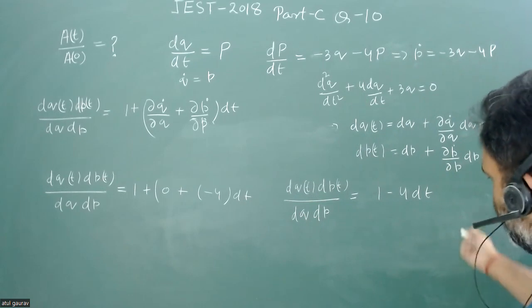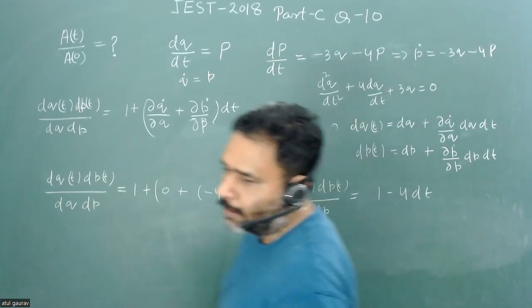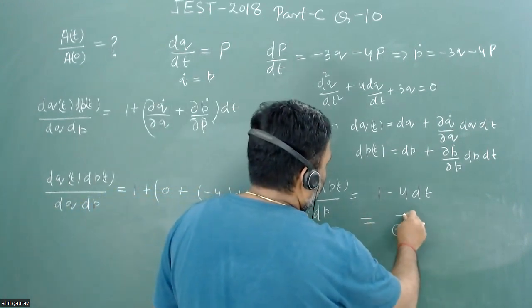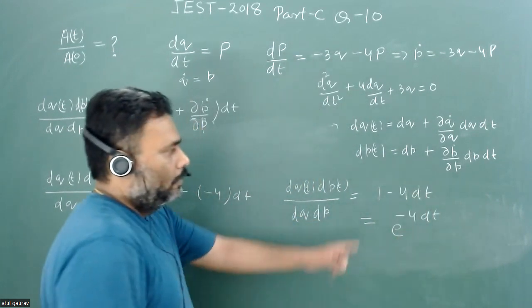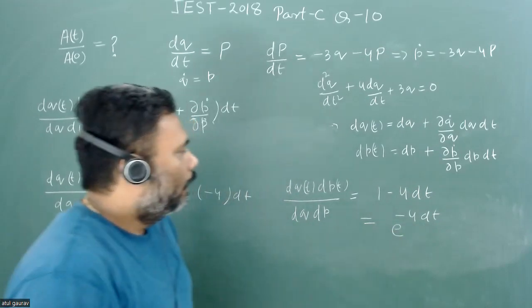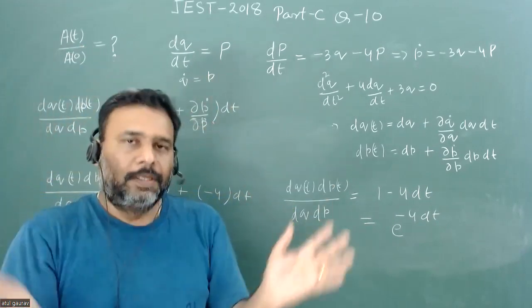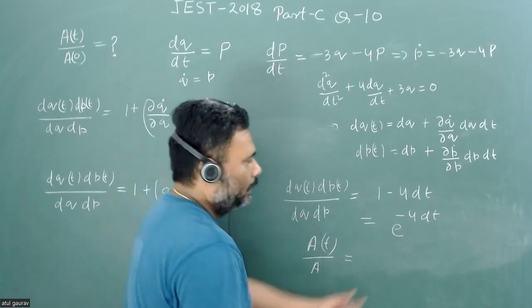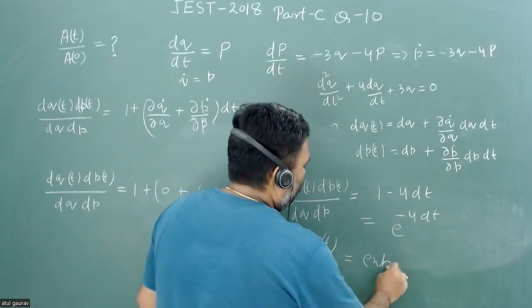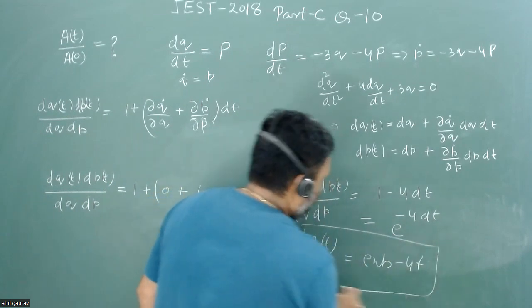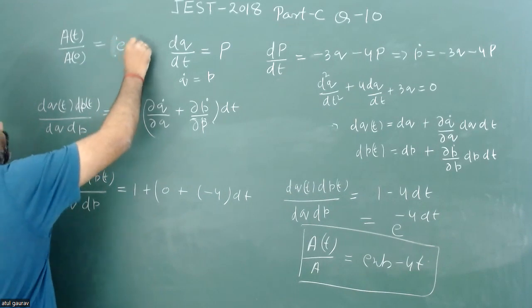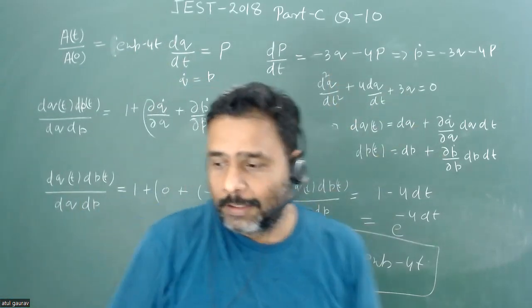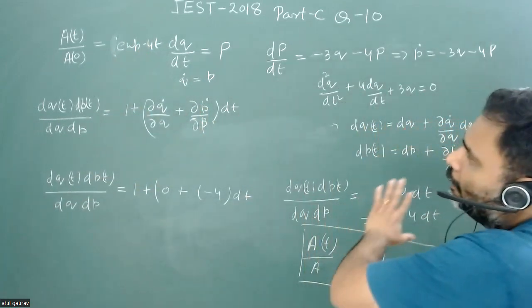This expression 1 - 4·dt is the first-order Taylor expansion of e^(-4·dt). We were talking about an infinitesimal phase area; for the complete phase area, this generalizes to: A(t)/A(0) = e^(-4t). So the phase area varies as e^(-4t), and this 4 corresponds exactly to the damping constant we identified earlier.